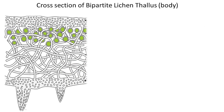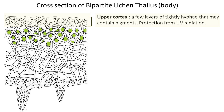Lichens have a complex structure of the body, which is called the thallus. The first layer by which the lichen interacts with the environment is the cortex — upper and lower. The upper cortex, facing the external environment, consists of a few layers of densely arranged fungal cells or hyphae. This layer may contain pigments like melanin, which are synthesized in response to elevated UV radiation.